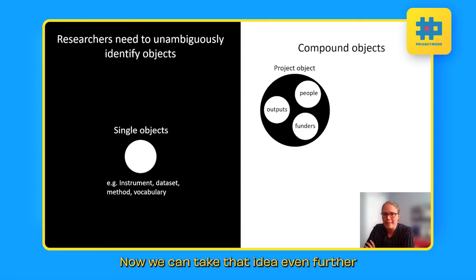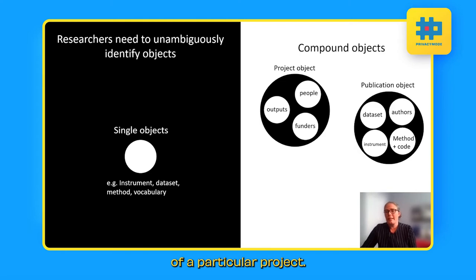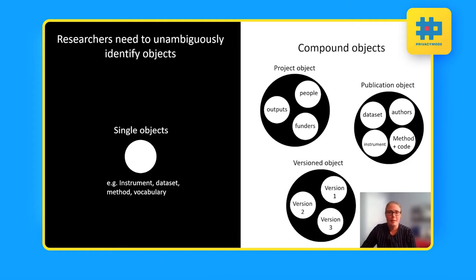We can take that idea even further because with the creation of compound objects, we would have a project compound object where it would reference the people and the outputs and the funders that were all part of a particular project. We can then do the same thing for publications. A lot of research information is disseminated via a publication, which is a collection written by a set of authors describing the methodology, any code that's used, instruments that were used, the datasets that were generated.